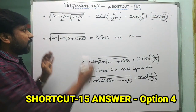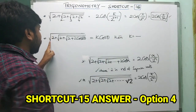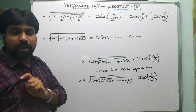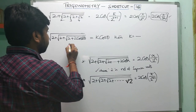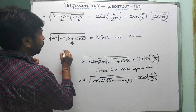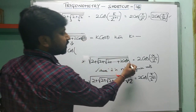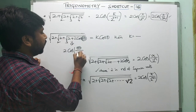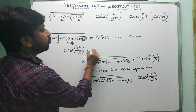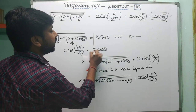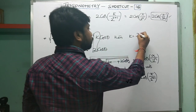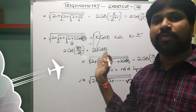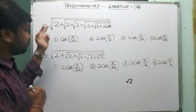Questions may also be framed like this: square root of 2 plus square root of 2 plus square root of 2 plus 2cos(8θ) equals k·cos(θ). What is the value of k? Using the shortcut formula with alpha = 8θ and n = 3 roots, we get 2cos(8θ / 2³) = 2cos(8θ/8) = 2cos(θ). So k = 2 is your answer. Knowing this shortcut, you can crack these questions very easily.